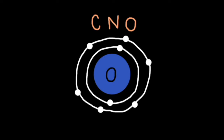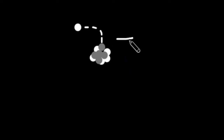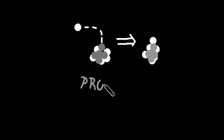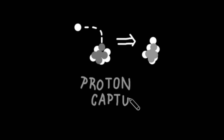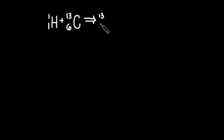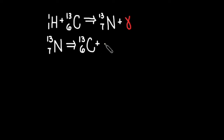In typical conditions, the CNO cycle fuses hydrogen into helium rather slowly, because it is largely dependent on proton capture. First, a carbon atom captures a hydrogen nucleus, forming nitrogen-13. Then the nitrogen-13 atom will undergo positron emission.